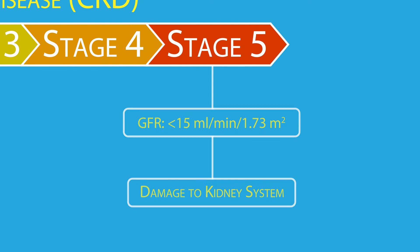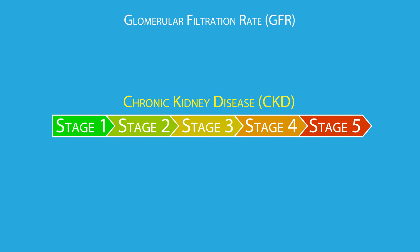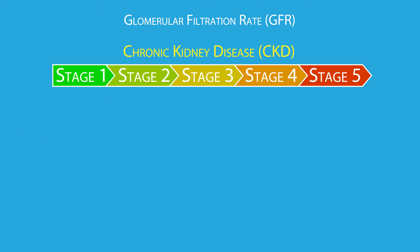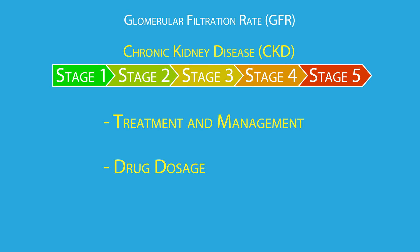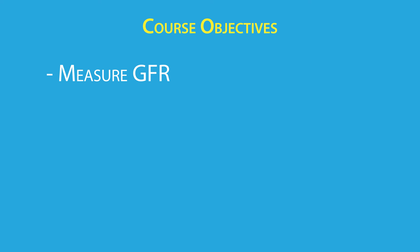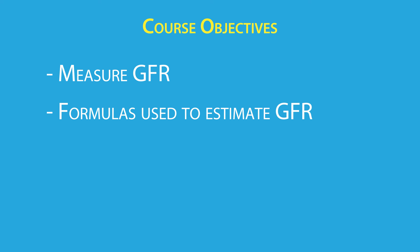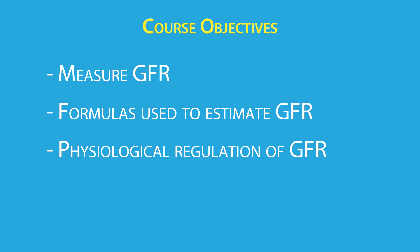Besides being used to diagnose the stage of kidney disease, GFR is used to determine the course of treatment and management of chronic kidney disease as well as the dosage of many drugs, because as GFR decreases, so does the clearance of these drugs. Over this course, we'll review the basics of how GFR is measured, the clinical formulas used to estimate GFR, the basic physiological factors that regulate GFR, and a number of drugs that affect GFR.